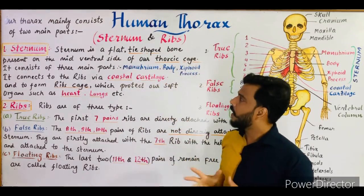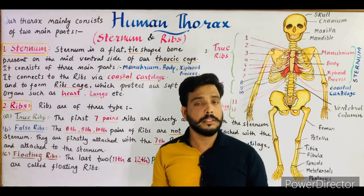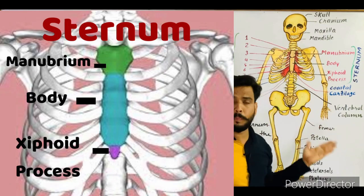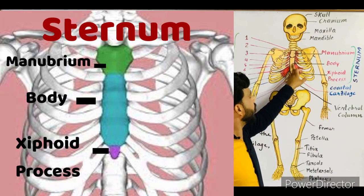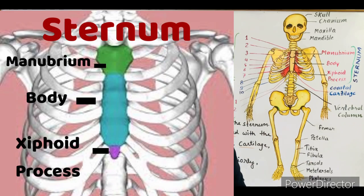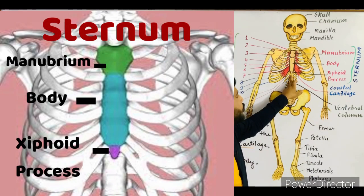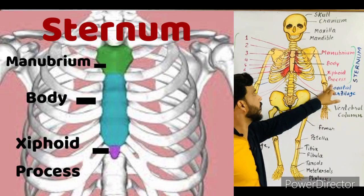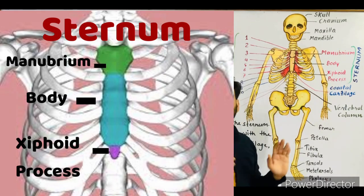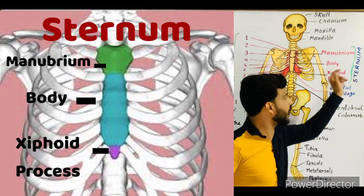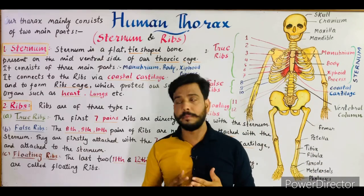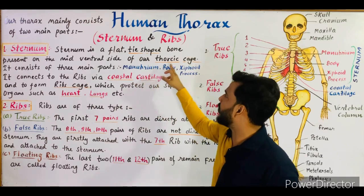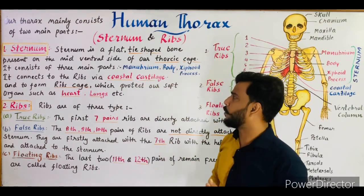The sternum consists of three main parts. The upper rounded part is known as the manubrium. The middle longer part is known as the body of the sternum. The lower-most small process-like structure is the xiphoid process. All these structures collectively make up the sternum — manubrium, body, and xiphoid process.